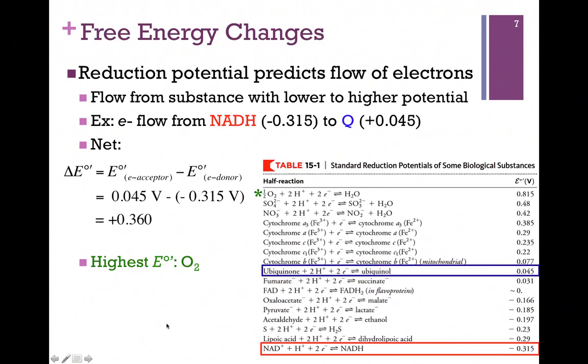Now you'll notice in our table here, oxygen has the highest reduction potential, and as we'll see in this electron flow, it will be oxygen that ultimately receives those electrons.